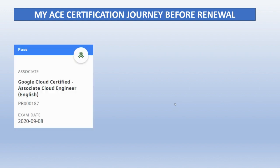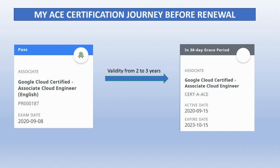In 2020 I gave the Google Cloud Certified Associate Cloud Engineer exam. For this exam I had two years of validity, but after two years, last year they increased the validity to three years. Now, if you see, this exam is going to expire in the month of October this year.